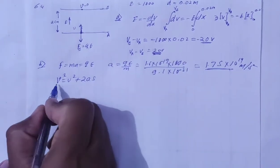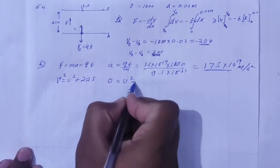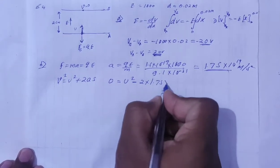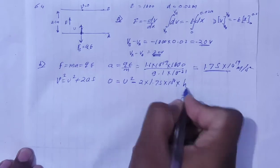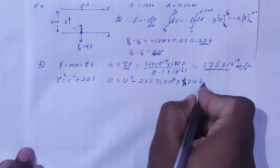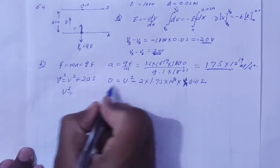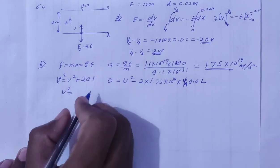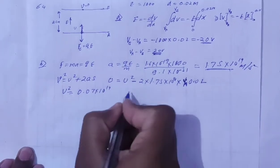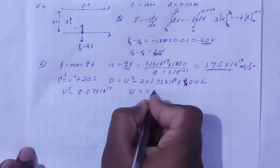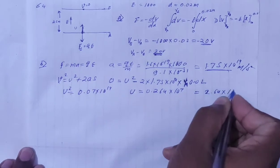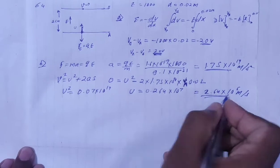With final speed zero, initial speed to find, the acceleration is negative (deceleration), so a equals minus 1.75 into 10 to the power 14 m/s², and s equals h equals 0.02 m. Solving u squared gives 0.07 into 10 to the power 14, and therefore u equals 2.64 into 10 to the power 6 meters per second — this is the speed projected vertically.